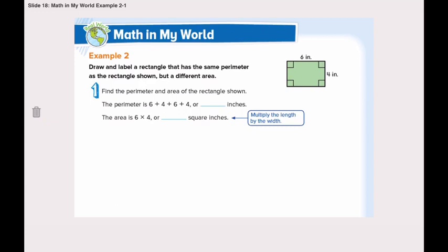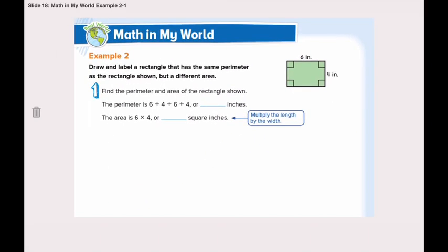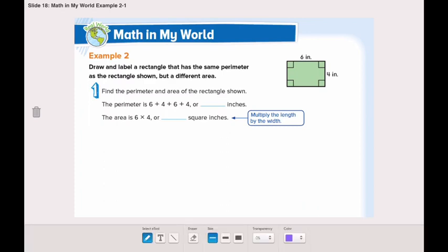Let's take a look at example number two. Draw and label a rectangle that has the same perimeter as the rectangle shown here, but it should have a different area. First, let's find the perimeter and area of this rectangle. The perimeter is adding all the sides: six plus four plus six plus four is twenty inches. And the area is six multiplied by four, which is twenty-four square inches.